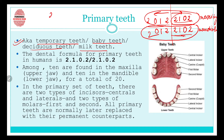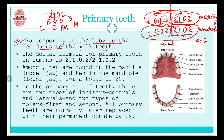In the formula 2102, the first number denotes incisors, the second canines, the third premolars, and the fourth molars. So there are eight incisors in total, four canines, zero premolars, and eight molars in the primary dentition — giving us 8 + 4 + 8 = 20 teeth.